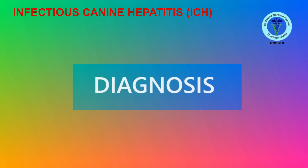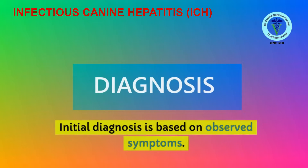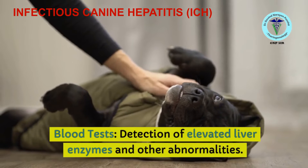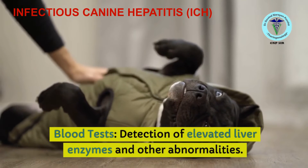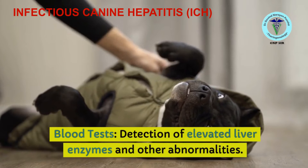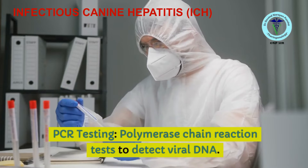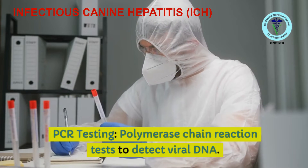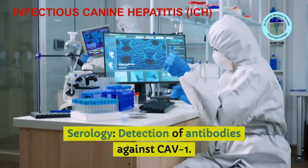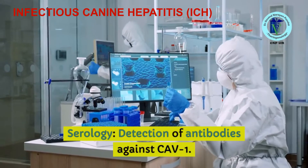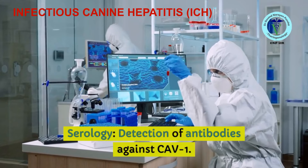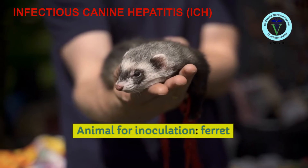Regarding diagnosis, the first approach is based on observed clinical signs or symptoms, followed by blood tests. Detection of elevated liver enzymes and other abnormalities can help in diagnosis. PCR — polymerase chain reaction — testing to detect viral DNA can confirm the disease, and detection of antibodies against CAV-1 can also assist in the diagnosis of infectious canine hepatitis.